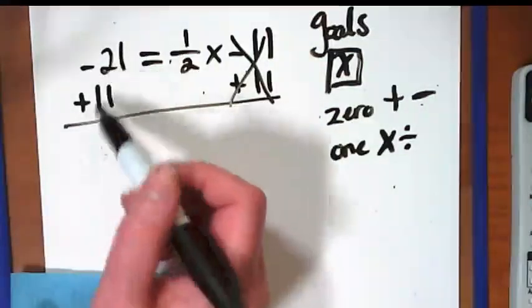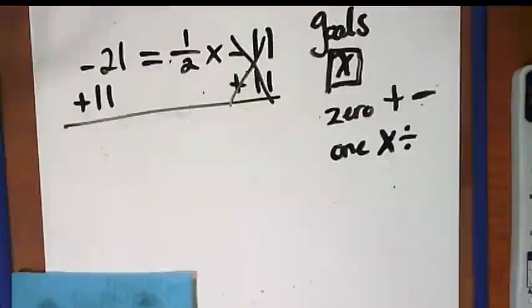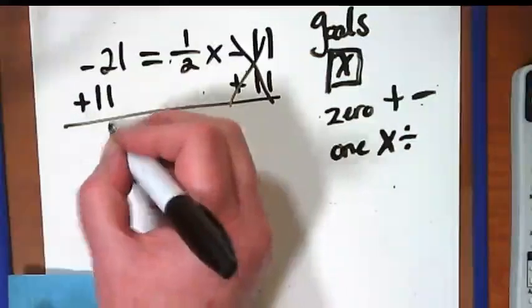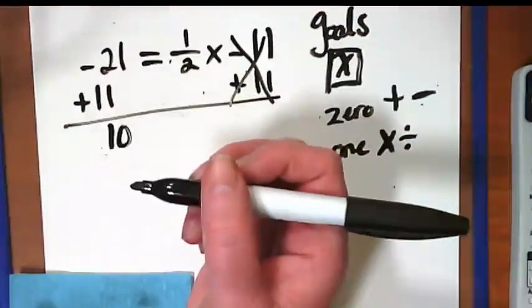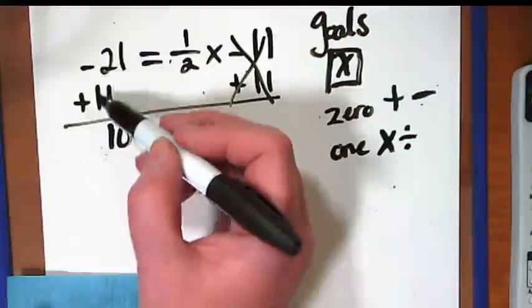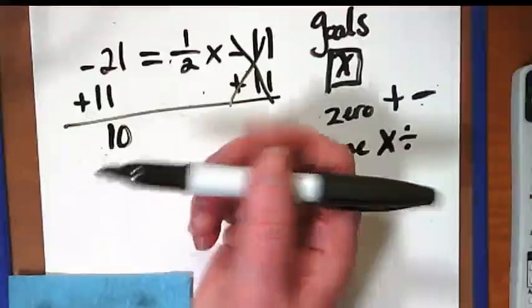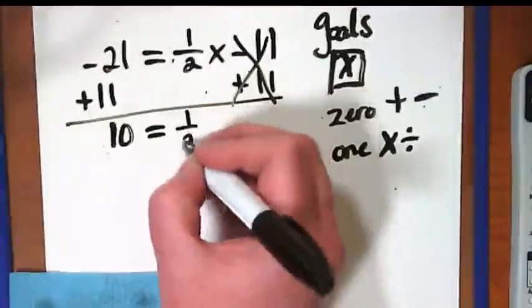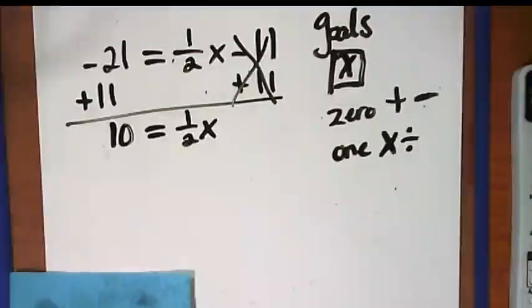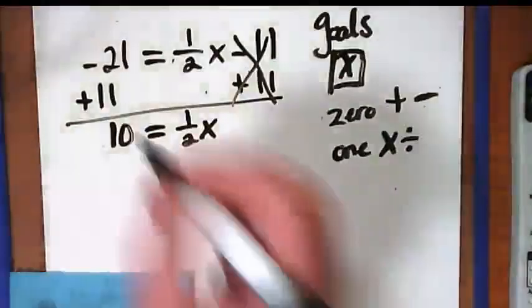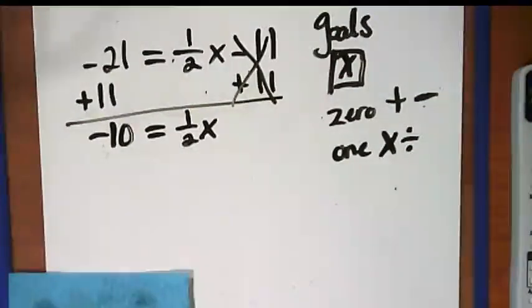Then I have negative 21 and positive 11. What does that equal? Ten. It's the same as saying 11 minus 21. On the right side, we have one half X. Oh, it's a negative 10. Thank you. Thank you for catching that. Why negative 10? Because negative 21 is further from zero than the 11. Right?